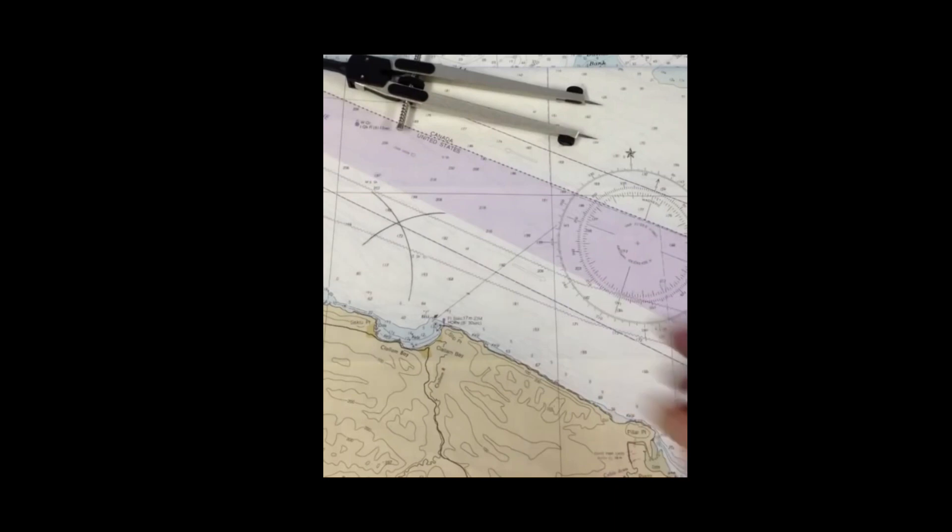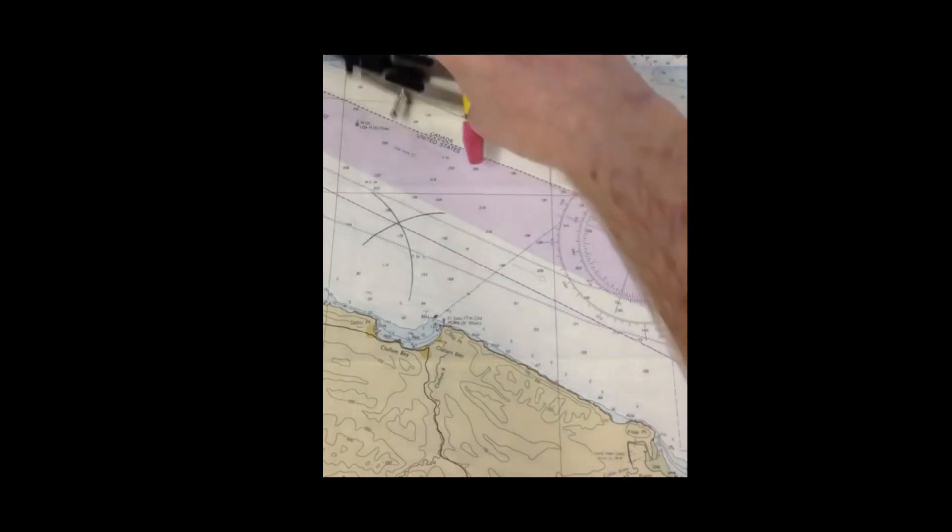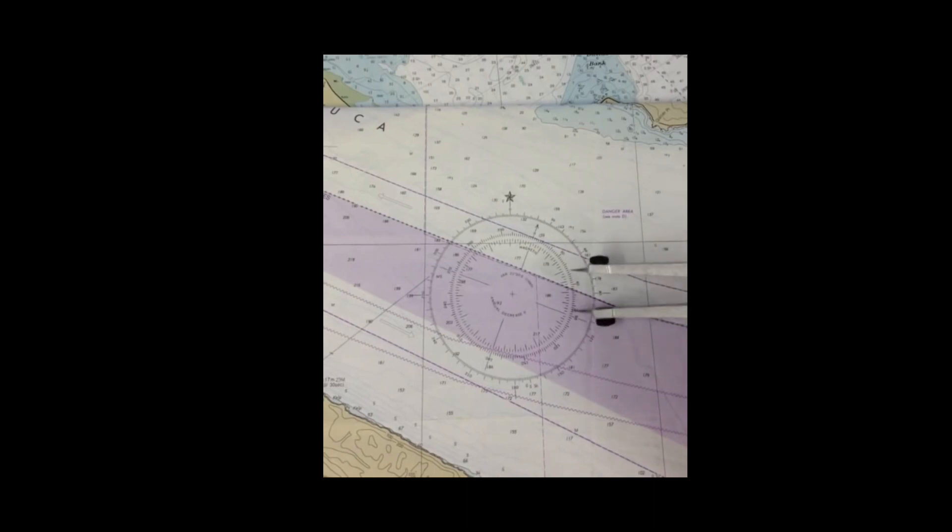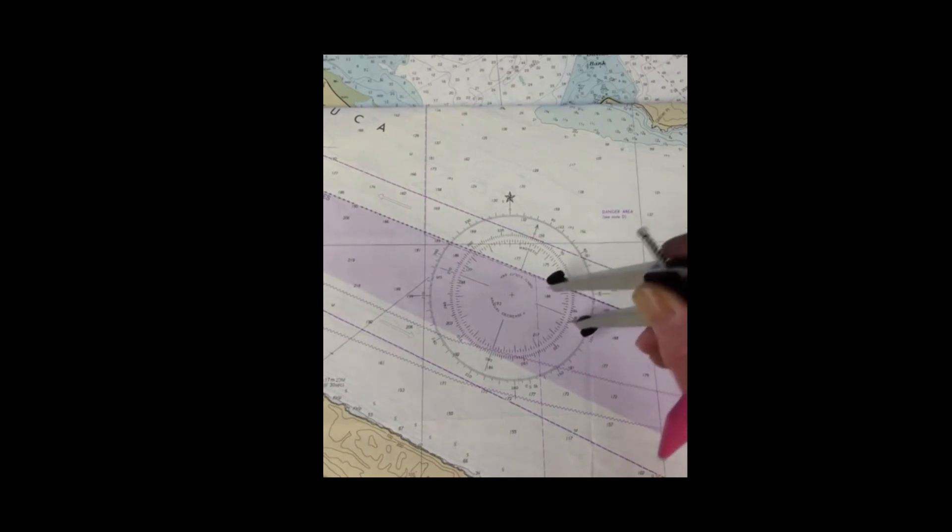At this point we turn to course 095. Same routine as before. Here's 90. Each of these are 2. So that's 2, 4, 5. Five is about right in the middle.